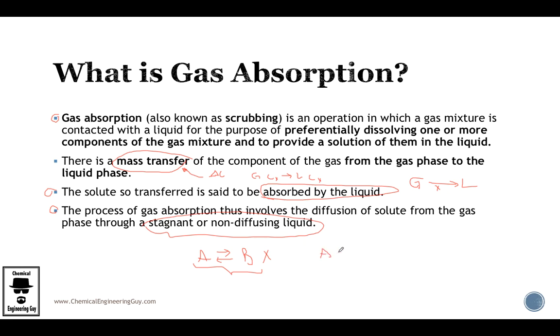But we're not talking about that. And the other one is A goes to B alone, also known as unimolecular diffusion, or also known as stagnant or non-diffusing B. So what this is implying is that B is the liquid phase, A is the material of interest, so A goes into B.